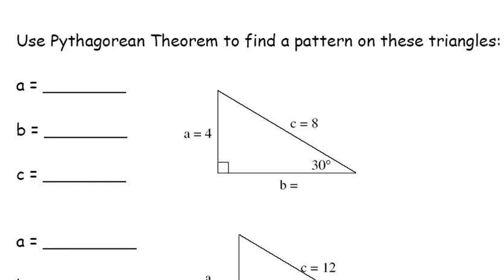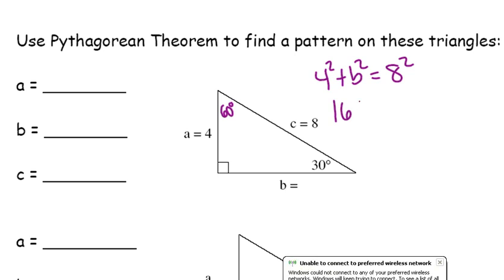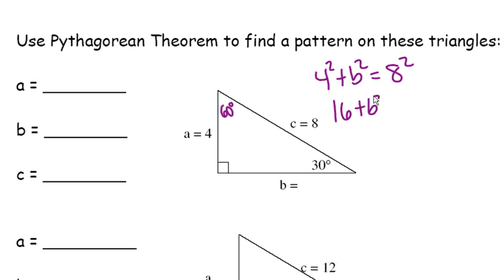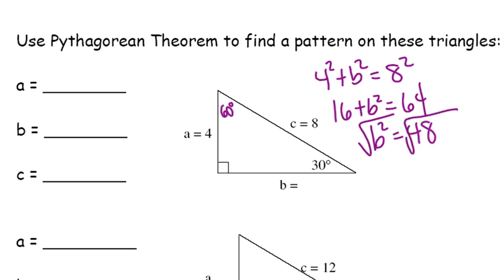Now let's talk about a different kind of right triangle. We have a right triangle in which one of the angles is 30 degrees, which means the other angle must be 60 degrees. Let's see if we can figure out what B is here. So 4 squared plus B squared equals 8 squared. 16 plus B squared equals 64, which means that B squared equals 48. Take the square root of both sides. What is the simplest radical form of B? Well, 48 is 16 times 3, and when I take the square root of 16, I get 4. So I get 4 radical 3 for my answer.